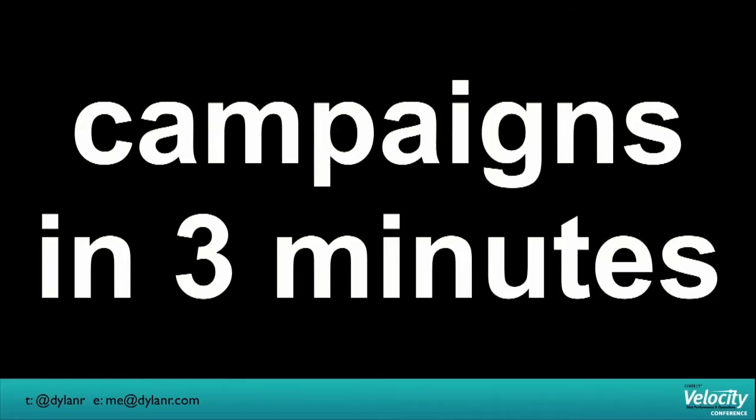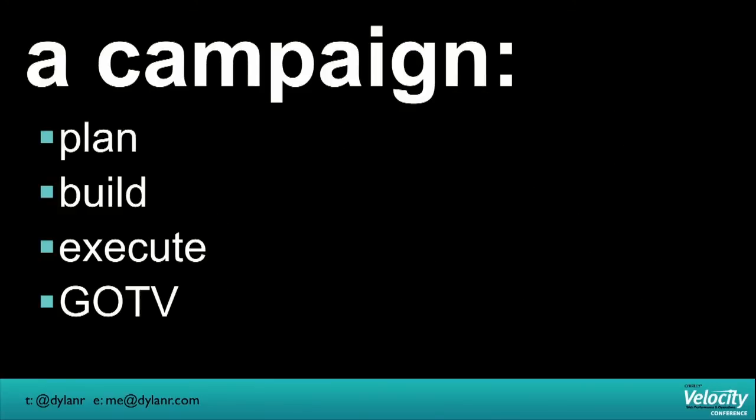So you guys now know more about campaigns than I did when I started. I'm going to give you the rundown of how campaigns work in about three minutes. There are four phases: Plan, Build, Execute, and then GOTV. Pro tip: GOTV is not a TV station. I made that mistake when I started. That means get out the vote, and we'll talk about that in a minute.